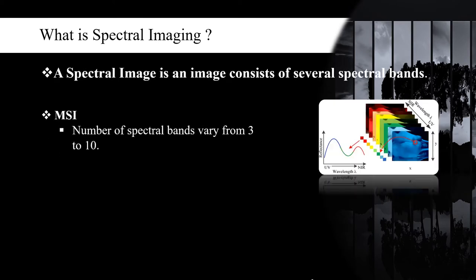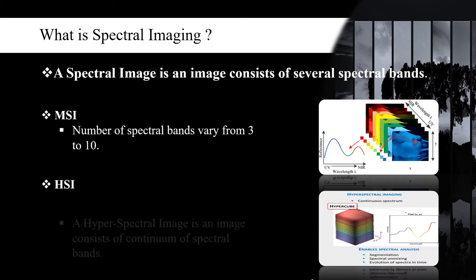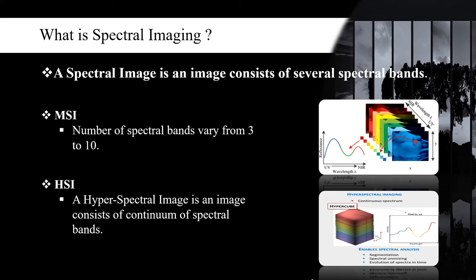Number of spectral bands of a multispectral image can vary from 3 to 10. A hyperspectral image is an image consists of continuum spectral bands.